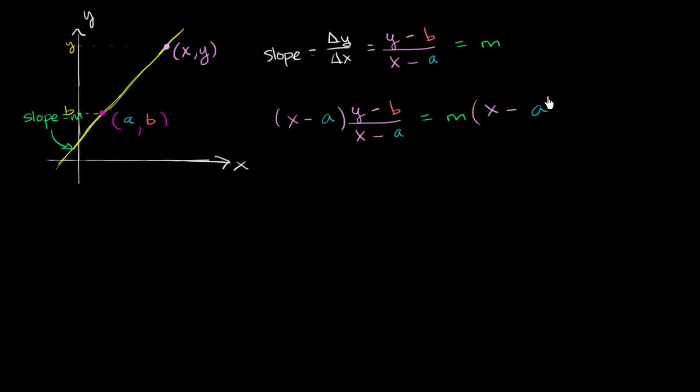So we're going to multiply both sides by x minus a. The whole point of that is you have x minus a divided by x minus a, which is just going to be equal to 1. And then on the right-hand side, you just have m times x minus a. So this whole thing has simplified to y minus b is equal to m times x minus a.